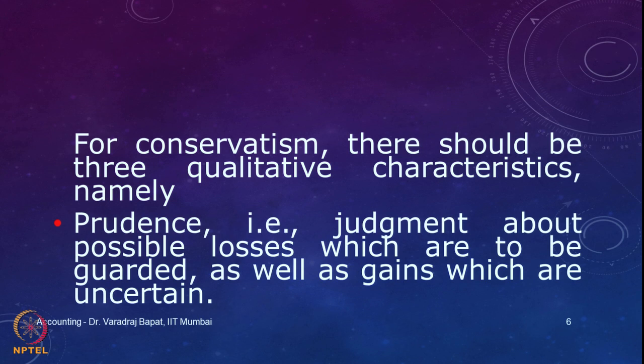For conservatism, there are 3 important qualitative characteristics. The first one is prudence — judgment about the losses which are to be guarded, as well as the gains which are uncertain. Even if there is a slight possibility of a loss, we account for it. We have discussed provisions when discussing the balance sheet. Whenever there is a likelihood of a loss, we estimate the likely loss, make a provision, and show it in the balance sheet as a liability. But when it comes to possible gains, we do not account for them.